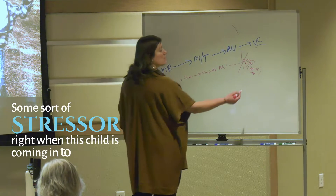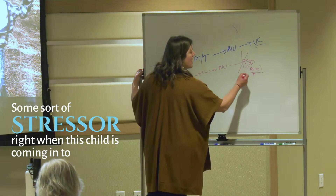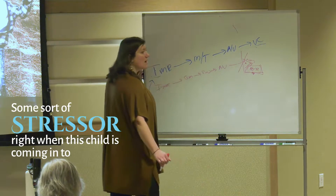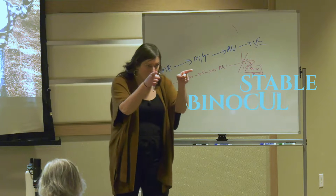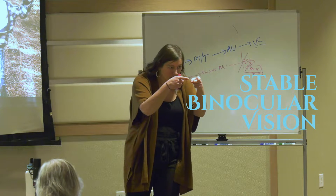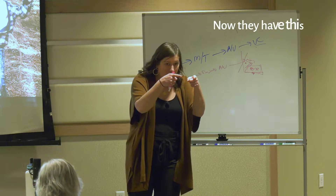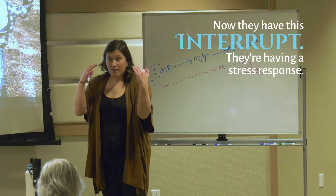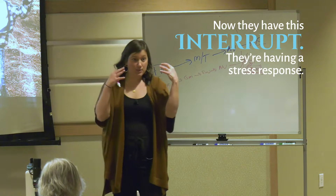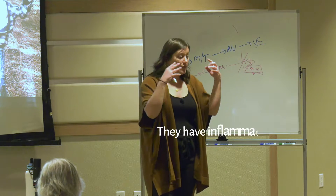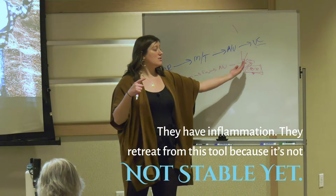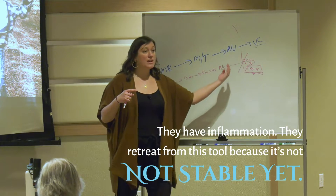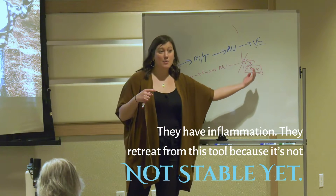Some sort of stressor happened right when this child is coming into stable binocular vision. Now they have this interrupt — they're having a stress response, they have inflammation, and they retreat from this tool because it's not stable yet.